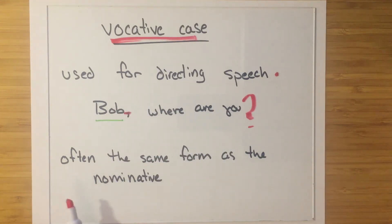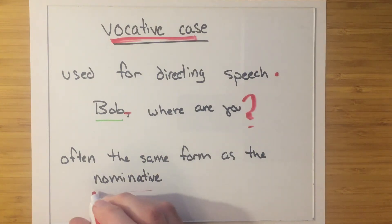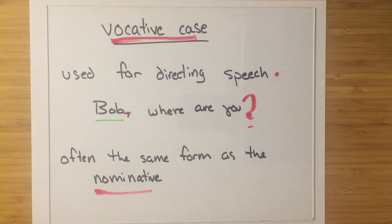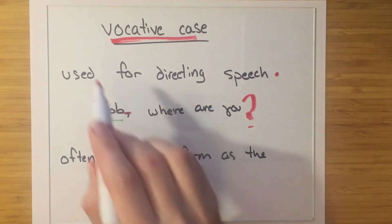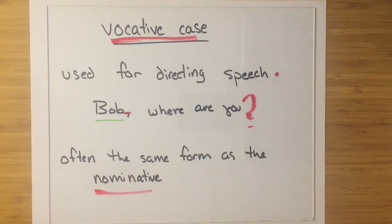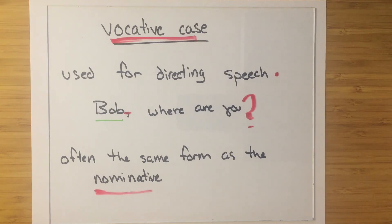A lot of languages will have the vocative as the same form as the nominative usually, and the way we distinguish it is that there are a couple of rare cases where it would be different. So altogether, this is a common case and it is used, so it's important to be aware of it. But very often when it is used, it's not always different from the other forms — it might just be different sometimes.